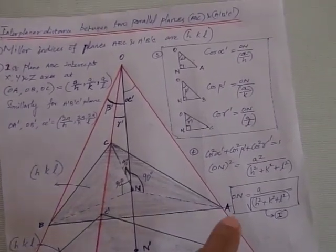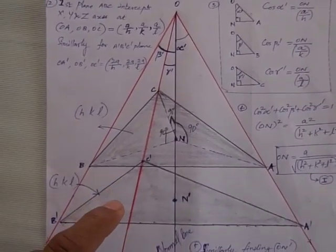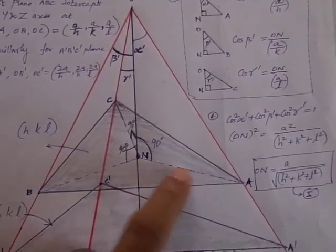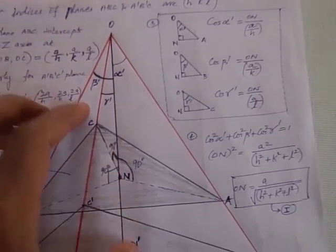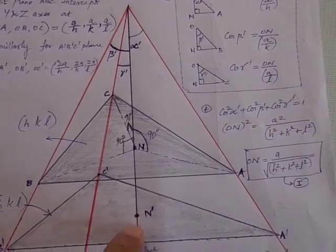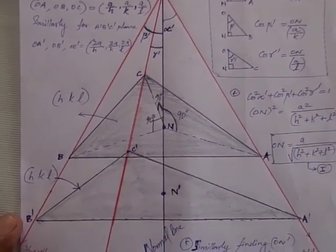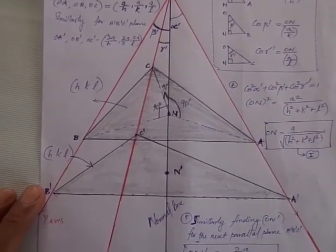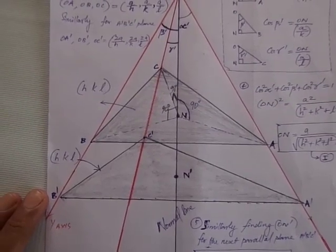Plane ABC is shown here. A normal drawn from the origin to the planes touches at points M and N' respectively in planes ABC and A'B'C'. These are all the diagrammatic illustrations.